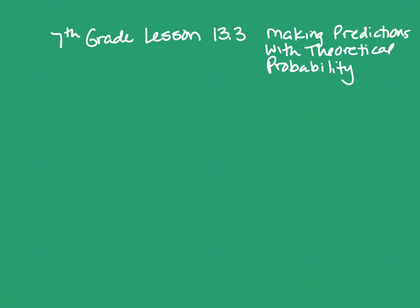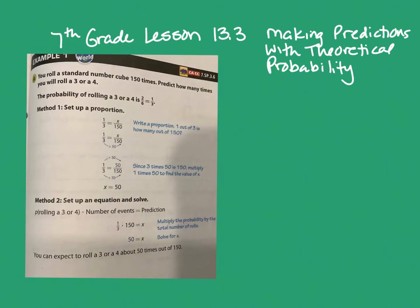So let's have a look at how we use theoretical probability to our advantage. The tool we want to dig out of the toolbox in our brain is our knowledge of equivalent fractions, because we're going to be comparing two ratios and they're going to be equivalent to each other. That's the tool we use for reducing fractions and using proportions.